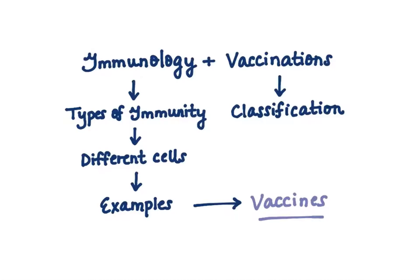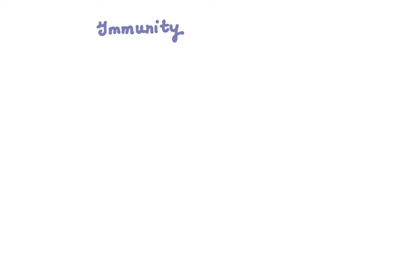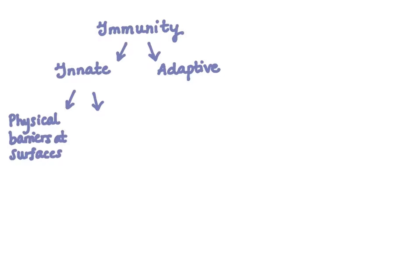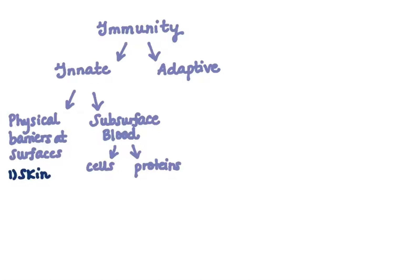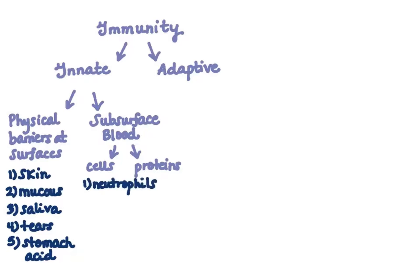First up: immunity. This can be subclassified into two broad categories — innate versus adaptive. Your innate system is something you're born with, further subcategorized into physical barriers at surfaces versus subsurface components such as your blood, which contains cells and proteins. Examples of physical barriers include epithelial surfaces — specifically your skin, mucous membranes, saliva, tears, urine, and stomach acid lining.